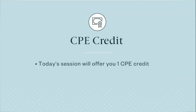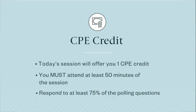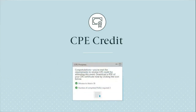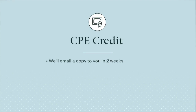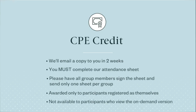Today's session will offer you one CPE credit. To receive credit, you must meet the requirements as specified by the National Association of State Boards of Accountancy. You must attend at least 50 minutes of the session and respond to at least 75% of the polling questions which we'll ask throughout today's presentation. To respond to a poll, click the button next to your answer. We'll track your progress and alert you when you've earned CPE credit. You can then click the certificate icon in the CPE progress widget to open a PDF file that you can save to your computer. Don't worry if you can't download your PDF certificate today — we'll email a copy to you in two weeks. If you're attending this webcast in a group, you must complete our attendance sheet to receive CPE credit. The attendance sheet is available in the slide deck and handouts widget. Please have all group members sign it and send only one sheet per group. Also note that CPE credit can be awarded only to participants registered as themselves and isn't available to participants who view the on-demand version.